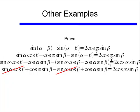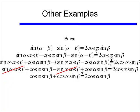Well if I look at this, I see that I have a sin(α)cos(β) and a negative sin(α)cos(β). If I add those two together, they equal zero, and I'm left with cos(α)sin(β) + cos(α)sin(β), and is that equal to 2cos(α)sin(β)?